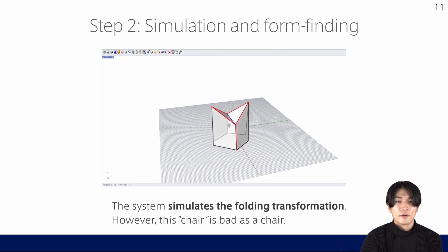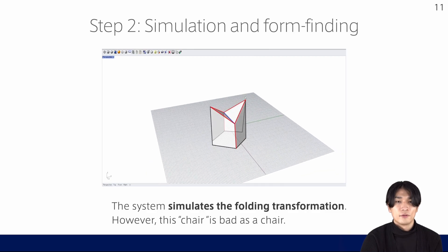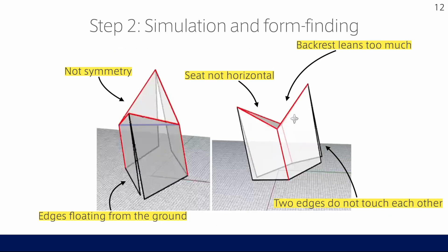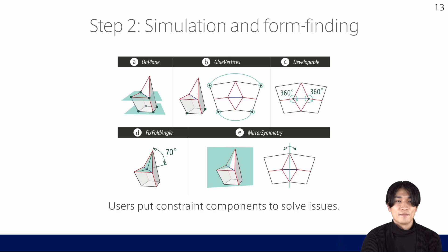However, as you can see, this chair design is not good, because the shape is not symmetric. The seat is not horizontal. The backrest leans too much. The bottom edges float from the ground, and two edges in the back should touch each other. Then, the user puts several constraint components to satisfy such requirements.